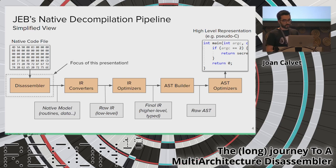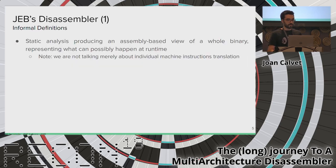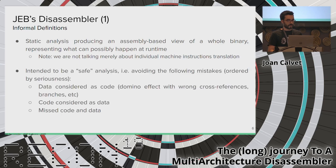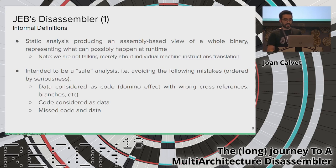In this talk we will focus only on the disassembler step. The JEB disassembler can be informally defined as a static analysis producing an assembly-based view of a binary, representing what can possibly happen at runtime — not merely the translation of individual machine instructions. It is intended to be a safe analysis. The worst mistake a disassembler can make is to disassemble data, because there's a domino effect creating wrong cross-references and branches. We also want to avoid considering code as data and missing it.